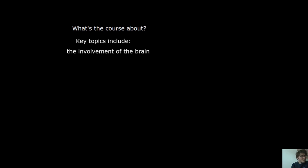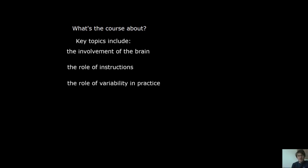Some of the topics we'll cover include the involvement of the brain — the brain has different structures and functions and we can take these into account when we design contexts that people practice in. We'll look at the role of instructions: how much instruction should you give somebody when first learning a motor skill? We'll also look at the role of variability in practice — how much variability should you expose somebody to in terms of the nature of the task or the environmental variables in order to optimize learning.